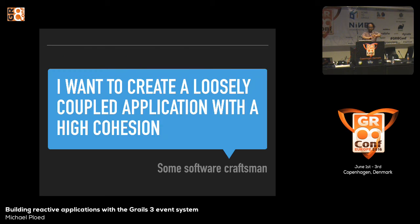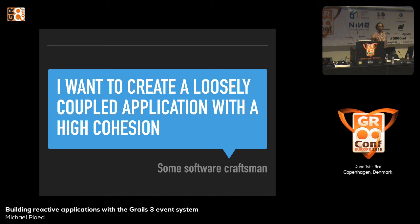The key idea is that we want to create loosely coupled applications — applications that have a loose coupling between components and a high cohesion in terms of business value. For a CMS application, the core business value is to write, edit, and publish articles. Linking an article on Twitter, Facebook, or Google Plus — we can say that's marketing. That's not the core business. Let's look at an example call stack.